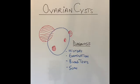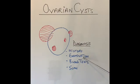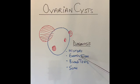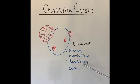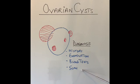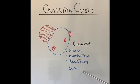Diagnosis of ovarian cysts is relatively straightforward. It involves taking a good history, abdominal and pelvic examination — including vaginal or rectal examination — and blood tests including hormone levels and cancer markers. Imaging such as ultrasound scans, CT, or MRI are also used; ultrasound of the pelvis can quite easily identify an ovarian cyst.